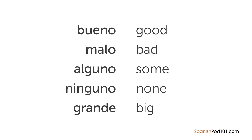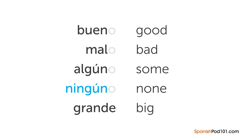Here they are: 'bueno' meaning good becomes 'buen,' 'malo' meaning bad becomes 'mal,' 'alguno' meaning some becomes 'algún,' 'ninguno' meaning none becomes 'ningún,' and 'grande' meaning big becomes 'gran.'